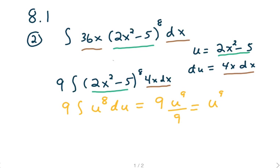We perform our calculus by using the power rule. We now have 9 times u to the 9th over 9, and that's equal to u to the 9th.